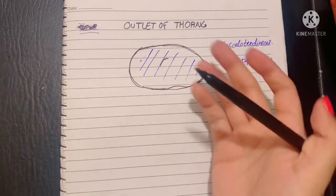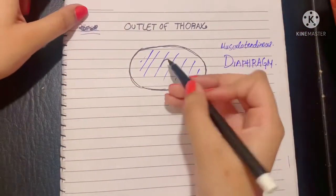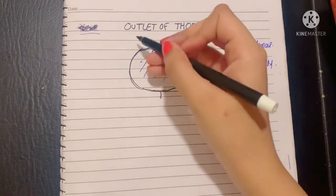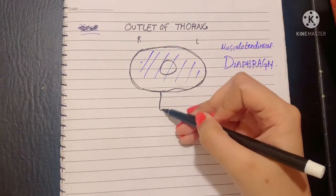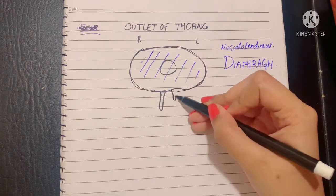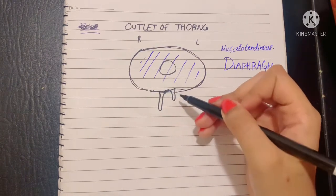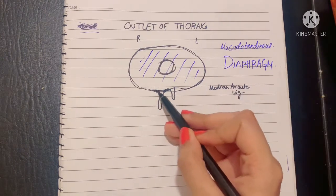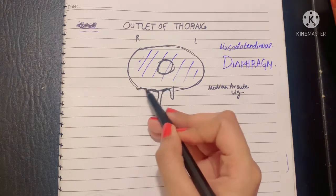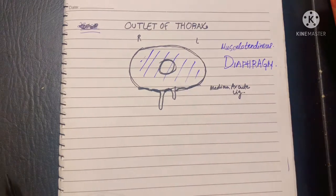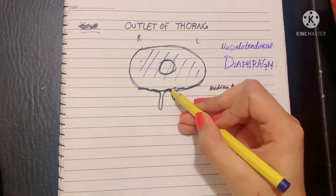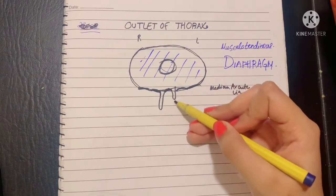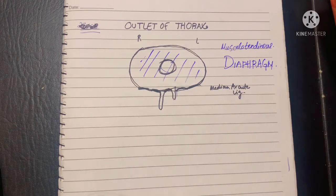Taking a transverse section of the body viewed inferiorly, the diaphragm has a central tendon. If this is the right side and this is the left side, it has a right crus and a left crus. Between these two lies the median arcuate ligament. Apart from this, there is a medial arcuate ligament and a lateral arcuate ligament on both sides. For now, we should know about the central tendon, the median arcuate ligament, and the two crura of the diaphragm — the right and left.